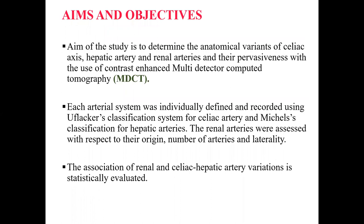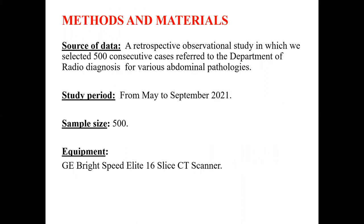The aim of the study is to determine the anatomical variants of the celiac axis, hepatic artery, and renal arteries and their prevalence using contrast-enhanced MDCT. Each arterial system was individually defined and recorded using Ufflacher's classification system for the celiac artery and Michaels' classification for hepatic arteries. The renal arteries were assessed with respect to their origin, number, and laterality. The association of renal and celiac-hepatic artery variation was statistically evaluated.